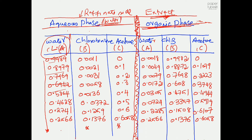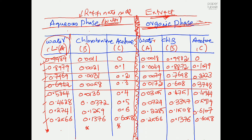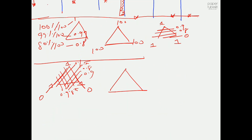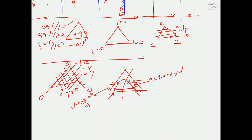We have eight experimental data points. Each experiment gives a raffinate composition and an extract composition (A, B, C on both sides). If you plot these on a ternary diagram, each pair of points connected by a line is called a tie line. So with eight experiments you get tie lines connecting the raffinate arm and the extract arm.